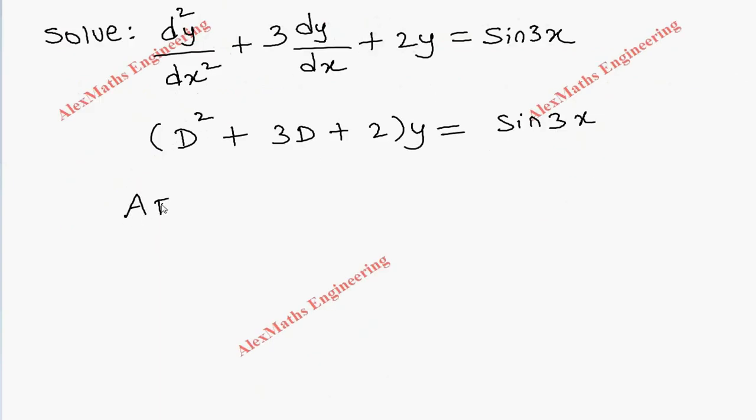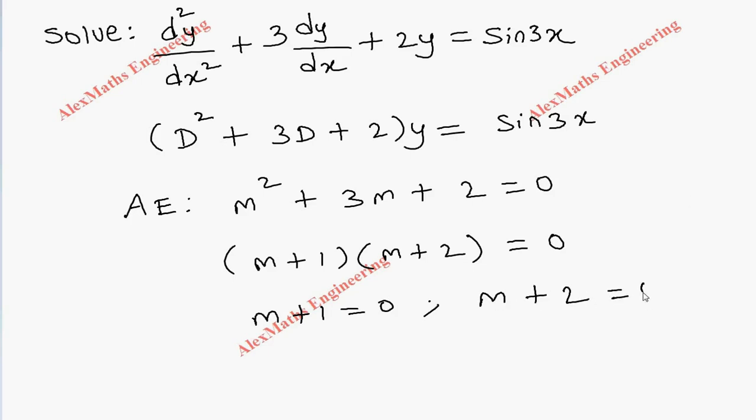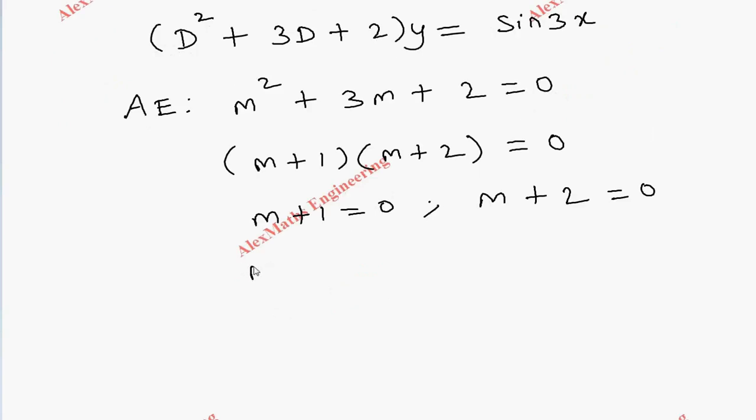We have to write the auxiliary equation, which is m² + 3m + 2 = 0. From factorizing, we get (m + 1)(m + 2) = 0. Equating each factor separately to zero, we get two values for m: one value is -1 and another value is -2. Both are real values but different values.